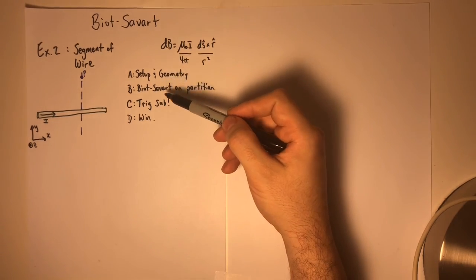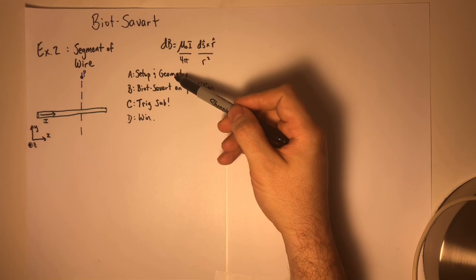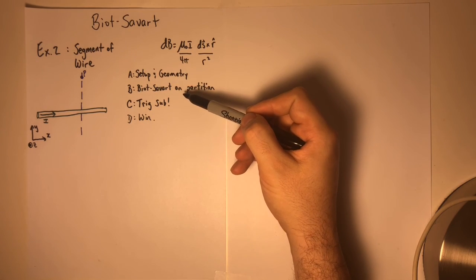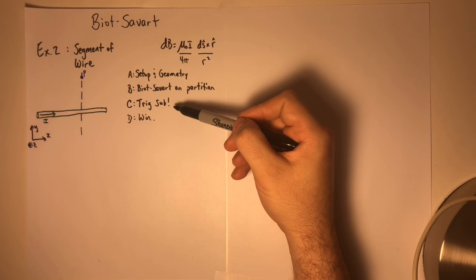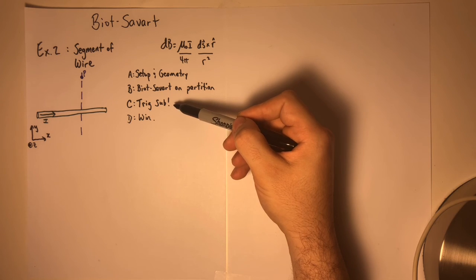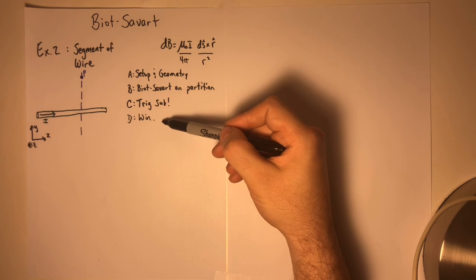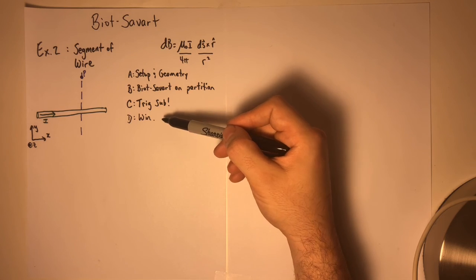So there are four major parts to this: the setup and geometry of the situation. We'll set up and use the Biot-Savart law. We will see that it's hard to make any progress with an X and Y-looking geometry because of the weirdness of the integral, and then we'll get the final solution by doing a trig sub.